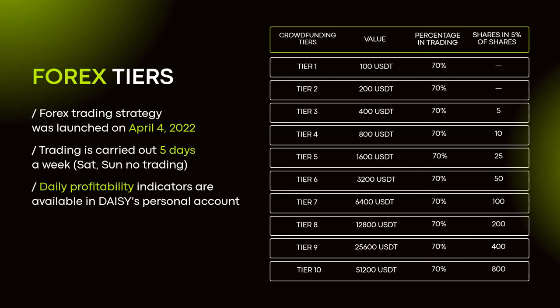Everyone starts with tier one, which is 100 USDT on the Tron blockchain. You will need USDT TRC20 to start with Daisy. On tier one, 70% will go into trading — the same is true for tiers two to ten. There are also specific momentum packs that help optimize your trading volume. Starting with tier three, you'll begin receiving shares in a 5% pool of EndoTech shares.